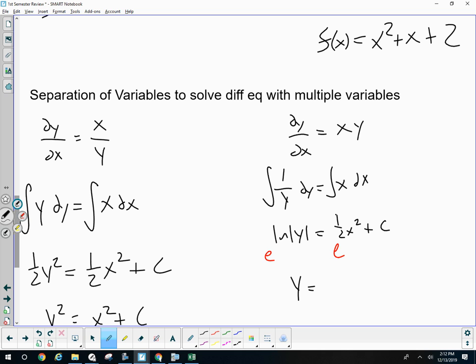Now, watch this. e to this power, make sure this entire thing is in the power of e. Now, what you're going to do is you're going to know that using exponent properties, this is e to the c times e to the one half x squared. That turns into c e to the one half x squared.